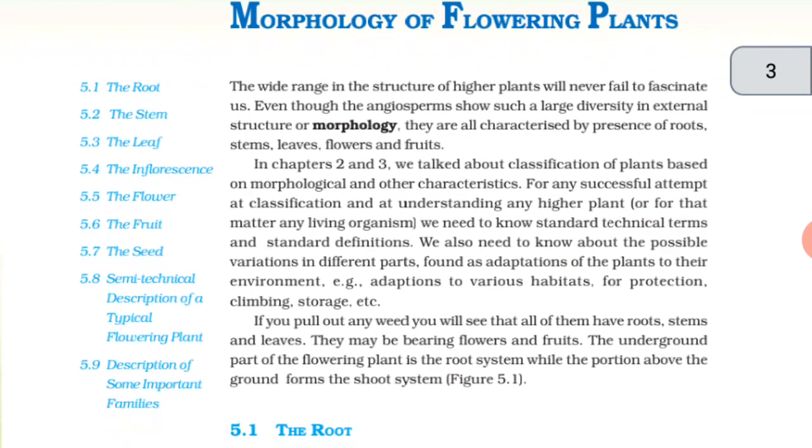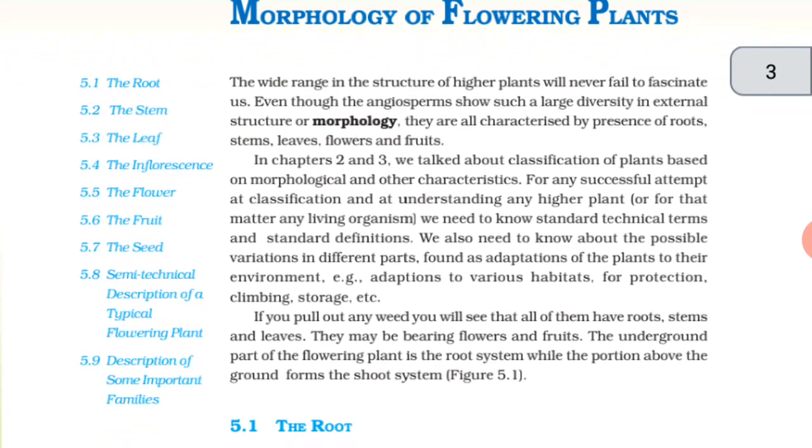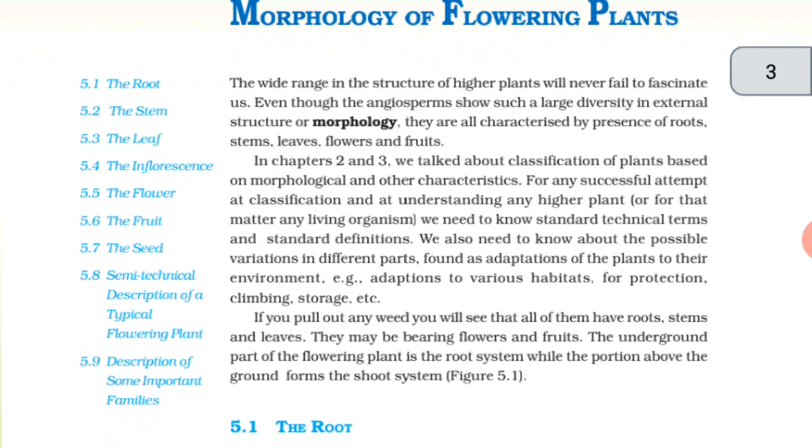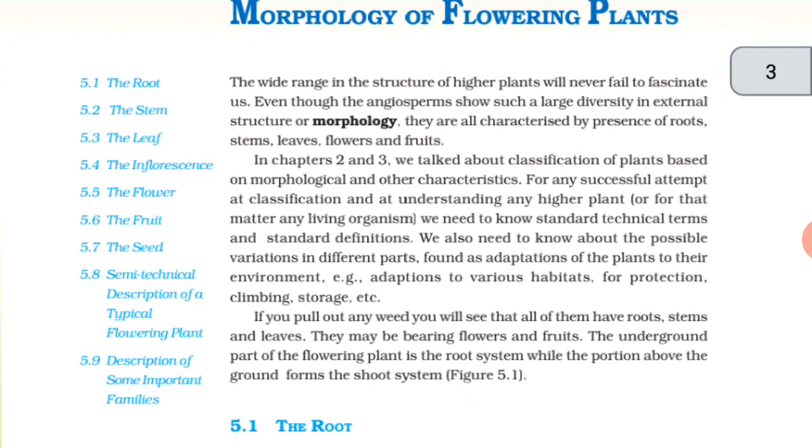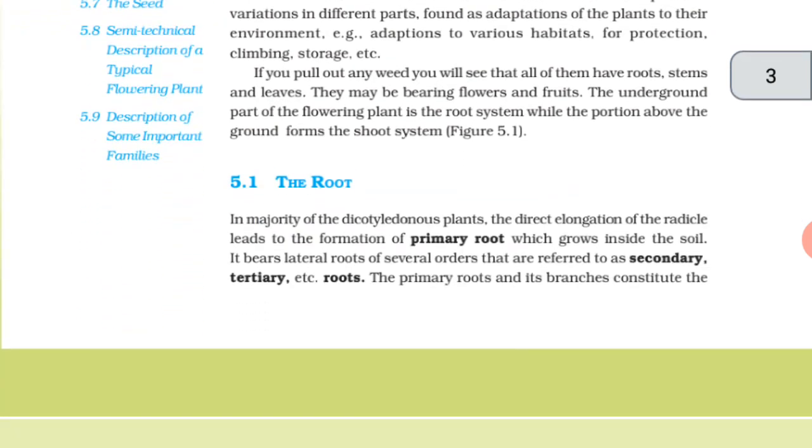If you pull out any weed, you will see that all of them have roots, stems and leaves. They may be bearing flowers and fruits. The underground part of the flowering plant is the root system, while the portion above the ground forms the shoot system.